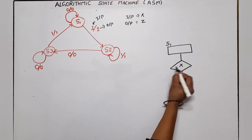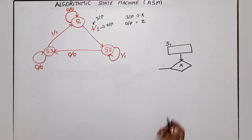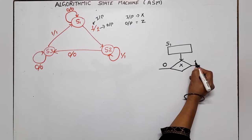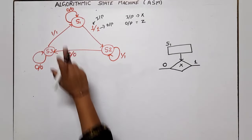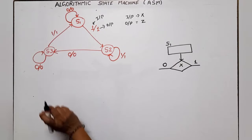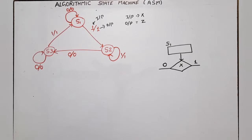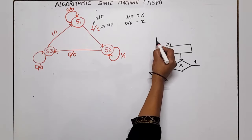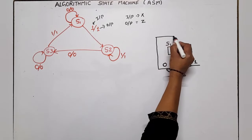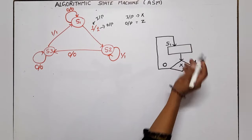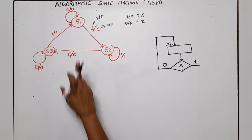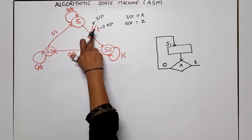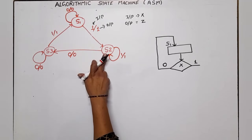The variable in this decision box is X. There are two cases — one for X=0 and one for X=1. According to the state diagram, if input is 0, the next state is S1 itself and the output is 0. Since output is 0, no conditional box is required. So when X=0, this exit path leads back to S1 itself.